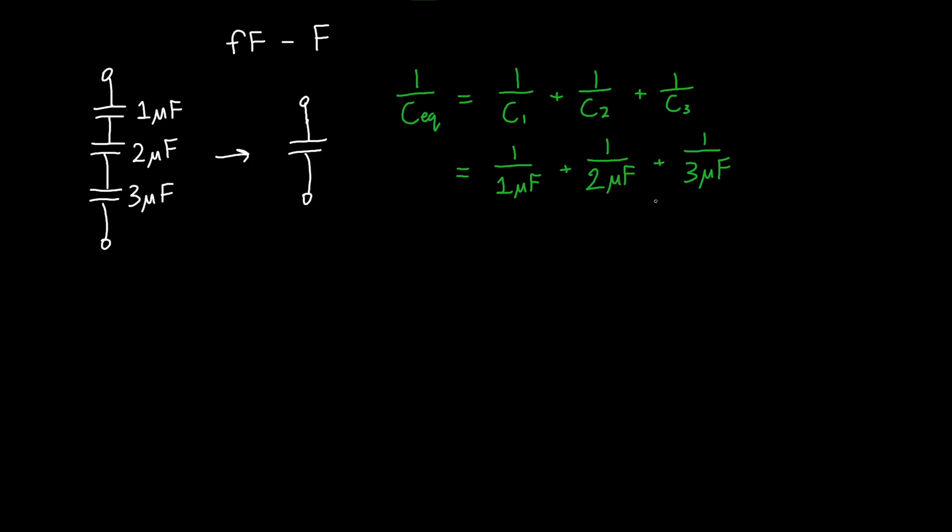And you could do this in your head. You can do it on a computer. I'm not opposed to either approach. In this case, because these are relatively simple, let's multiply this by two over two and this by three over three. So we get our common denominator of six, this by six over six. So we've got six plus three plus two all divided by six microfarads. So six plus three is nine, this is 11 over six microfarads. And now if we flip this to get the equivalent capacitance, we get that this is equal to six over 11 microfarads. So this is our final answer.